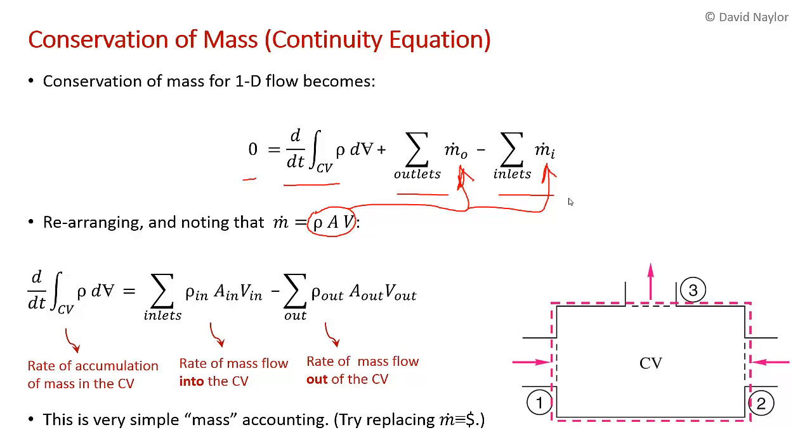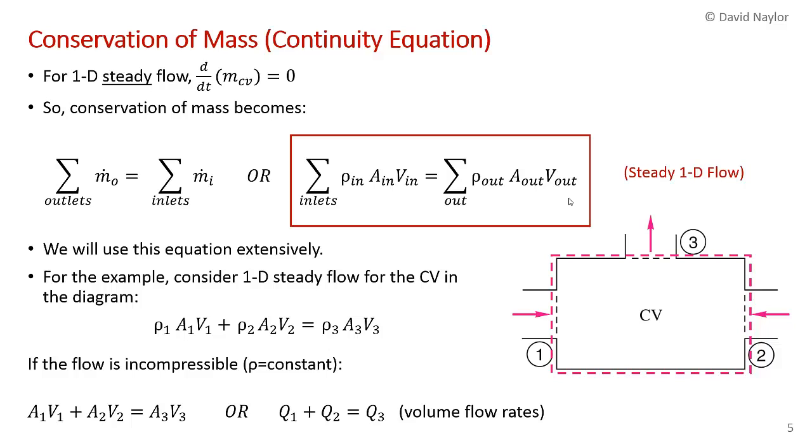I've done a little rearranging. The rate of accumulation of mass within the control volume equals the rate of mass flow into the control volume minus the rate of mass flow out of the control volume. If you've done thermodynamics, you've probably already seen this equation, but biomedical students don't get thermodynamics. We could have come to this without using Reynolds transport theorem. It's really very simple mass accounting in this case. One way to remember it is to think about replacing the mass flow rate with money. If you think about your bank account, it's just simple accounting. If you deposit $100 a week and take out $25 a week, your bank balance goes up at a steady rate of $75 a week. It's a very intuitive, simple concept, continuity.